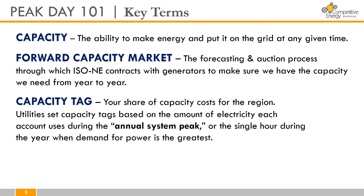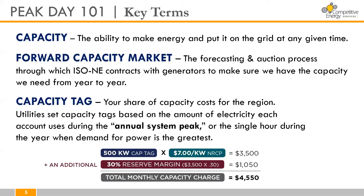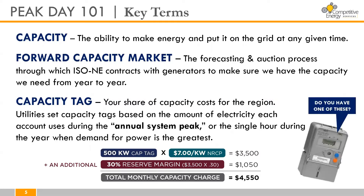So how are these capacity charges determined? In short, the answer is your capacity tag. Capacity tags are assigned based on the amount of electricity each account uses during the annual system peak — the single hour during the year when demand for power is at its greatest. There is a calculation to determine the impact of your capacity tag on your costs, but we won't be getting into the weeds on the numbers today. It's also important to mention that not everyone can control the price they pay for capacity — only accounts with interval meters, otherwise known as telemeters, can control their capacity tag.